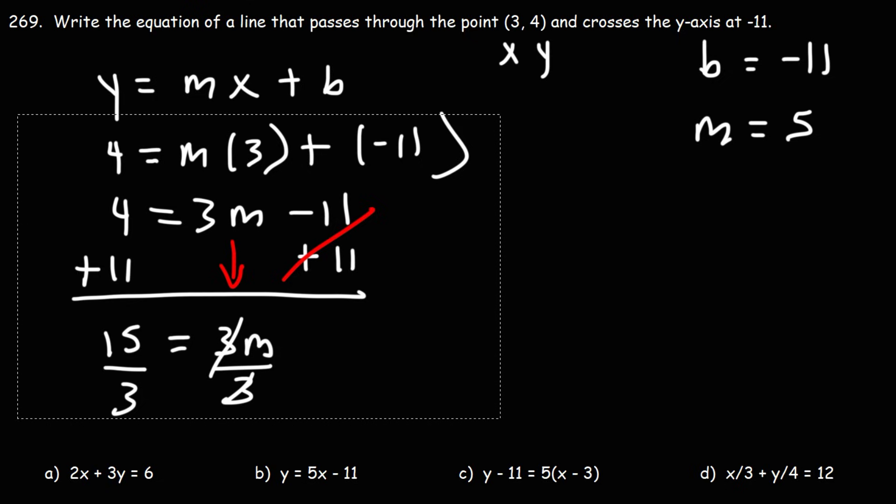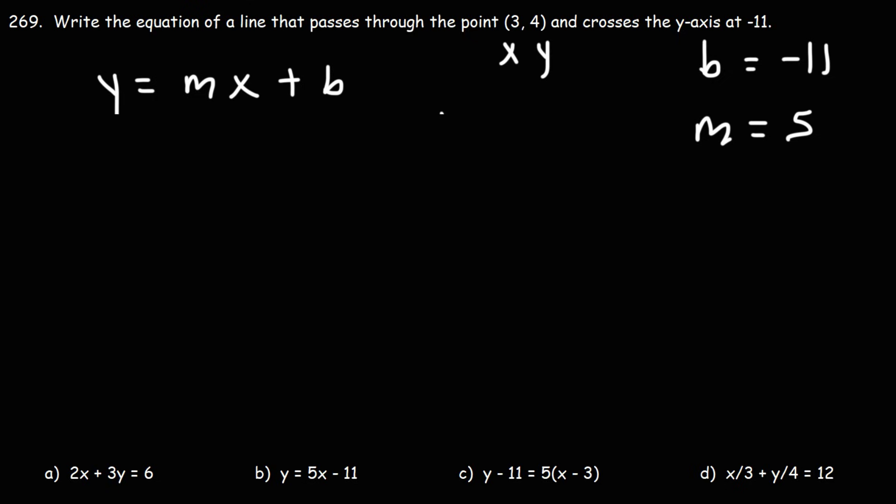So now that we know the value of m and b, we can write the equation in slope-intercept form. m is 5, b is negative 11. So the answer is y equals 5x minus 11.